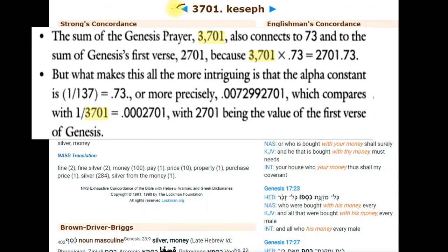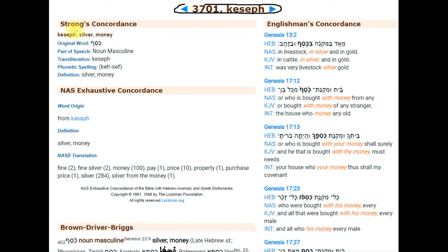Also at 3701, Kizeff, silver money in Strong's Concordance at number 3701.